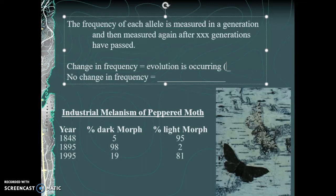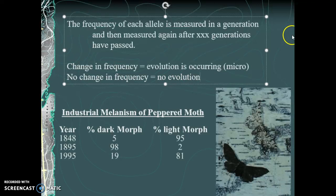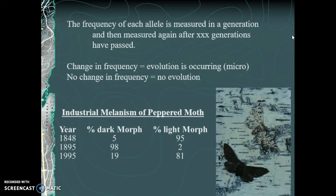If frequencies shift only a couple percent, we call it microevolution. If there is no change in frequency, the population is not evolving. Cuvier would have argued populations never change, but that's not the case — Cuvier's catastrophism is proven wrong. The data and evidence show populations changing, so we reject Cuvier's hypothesis based on scientific evidence.